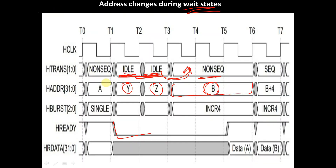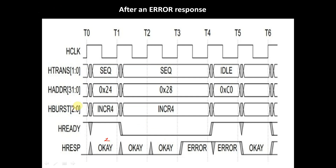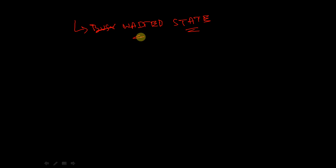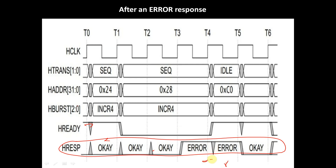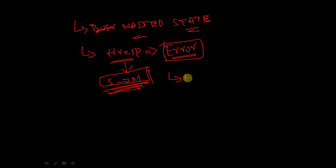Now let's consider the second scenario. Here we can see the HRESP signal — that is the response signal given by the slave to the master. During a wait state, when HRESP is equal to ERROR, here we can see when HRESP is equal to ERROR, then the master is allowed to change the address.